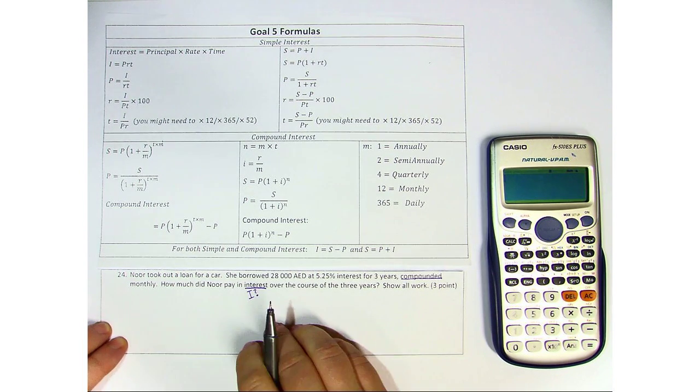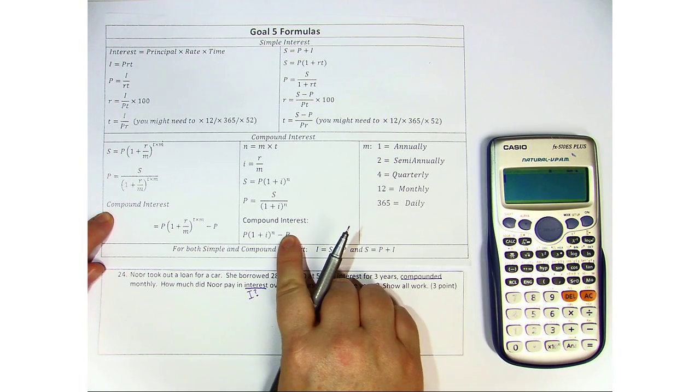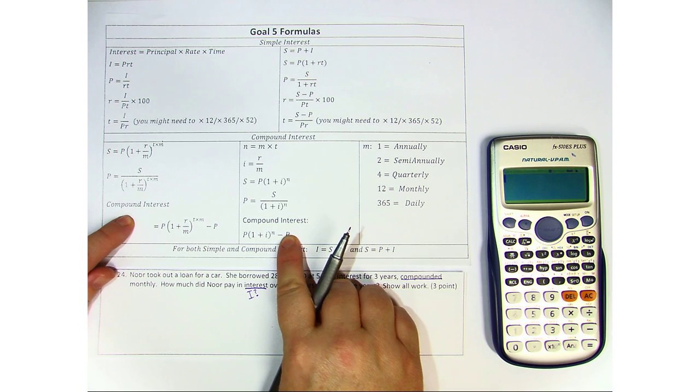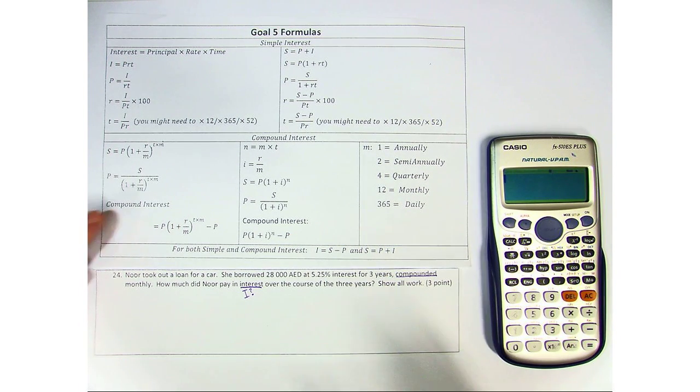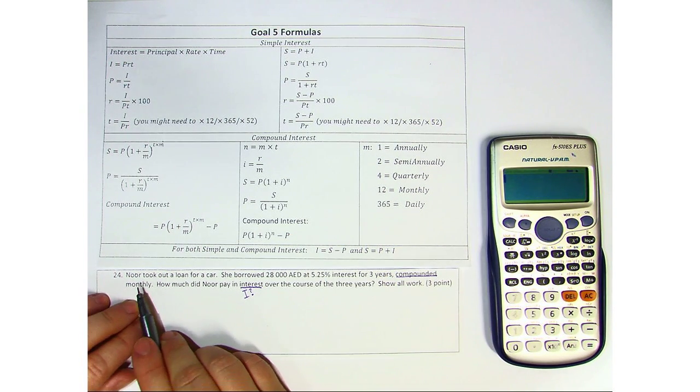And for compound interest, there's two different formulas we can use. I'm going to go ahead and use this formula so we can get the answer straight away. Let's go ahead and start by identifying our elements.